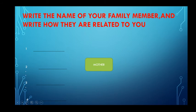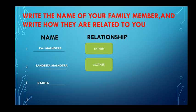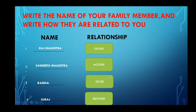Now, write the name of your family member and write how they are related to you — name and relationship. For example, your father's name is Raj Malhotra — how is he related to you? He is your father. Your mother's name is Sangeeta Malhotra — how is she related to you? She is your mother. How are your siblings related to you? She can be your sister or he can be your brother. These are the relationships with our family members.